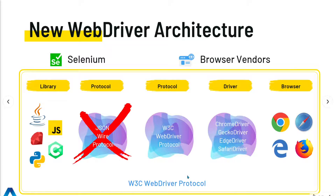Selenium WebDriver and the browser vendors are now speaking the same language. As a result, tests are going to be more stable and run smoother because there won't be any need to encode or decode information. This will also be good news for browser compatibility testing - you will no longer need to write special code to run tests in different browsers. Issues where a test passes in one browser but fails in another will hopefully no longer exist with Selenium 4.